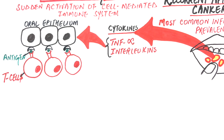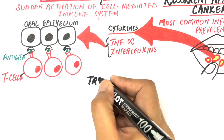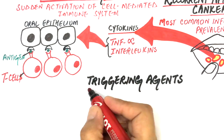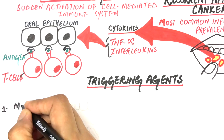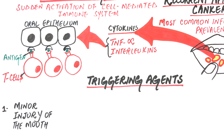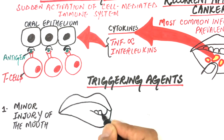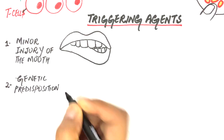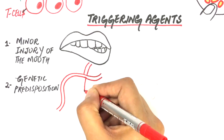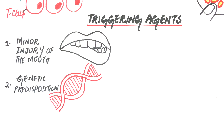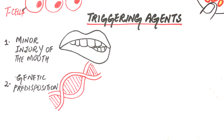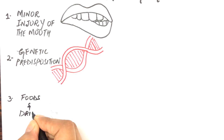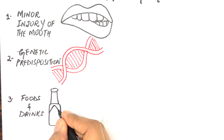Some non-triggering agents which can cause the stimulation of such an immune response include: minor injury to the inside of the mouth, for example from cuts, burns or bites while eating, denture work, hard brushing or ill-fitting dentures; familial tendency or genetic predisposition, a condition that tends to occur more often in family members than is expected by chance alone; and certain foods and drinks including coffee, acidic or spicy foods.